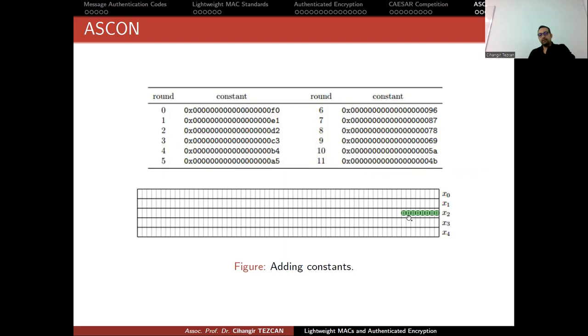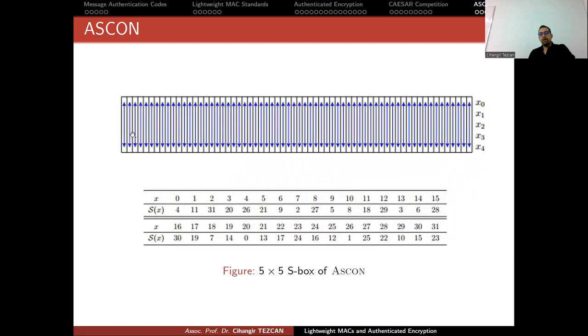You add the constants. At the 0th round you add this constant. Then you perform S-box operation to every column. Since you have 64 columns, you apply the S-box operation 64 times. Since you have five rows, you have 5-bit input and 5-bit output. This is your S-box.